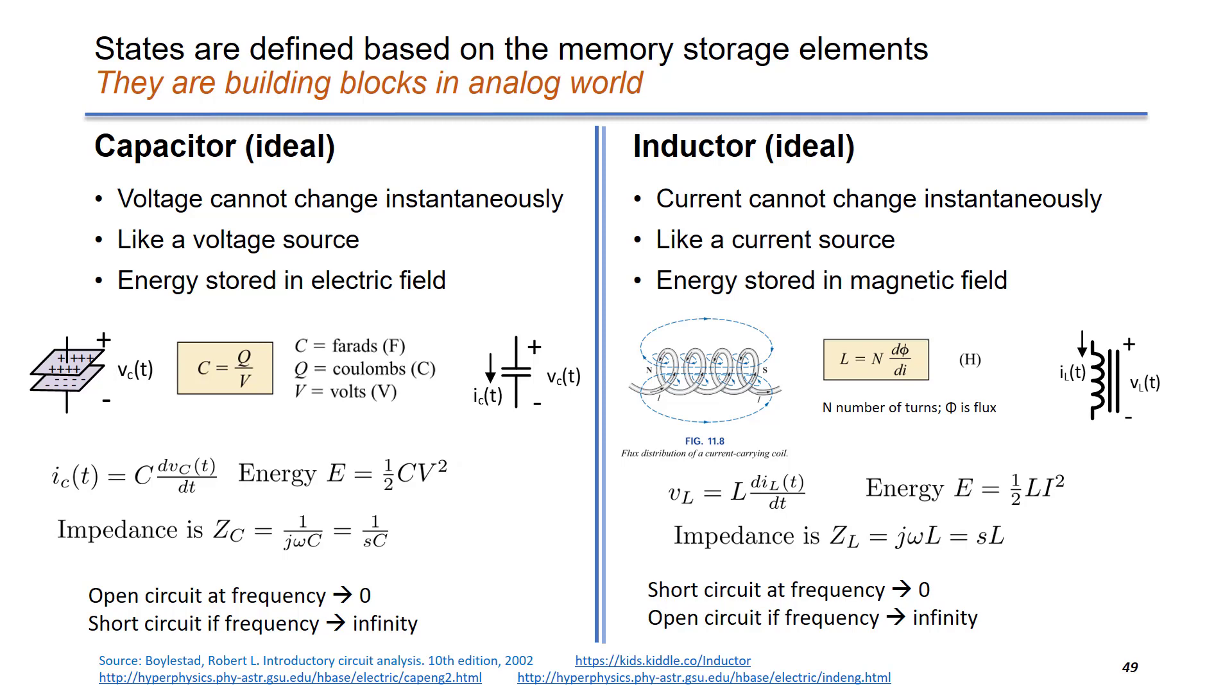The energy saved in capacitor is given in this equation. Another important parameter is impedance, Z, equals one over SC, where S is the complex variable in frequency. S equals to j omega. Omega is the angular frequency in radians per second.